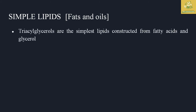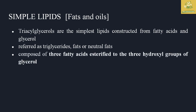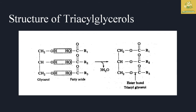Simple lipids include fats and oils. For example, triglycerols — also called neutral fats. Triglycerols are simple lipids formed from fatty acids and glycerol. The structure consists of three fatty acids joined to glycerol through esterification at three hydroxyl groups. Look at this picture: first glycerol, then two fatty acids undergo esterification — a hydrolysis process involving H2O — to form triacylglycerol.